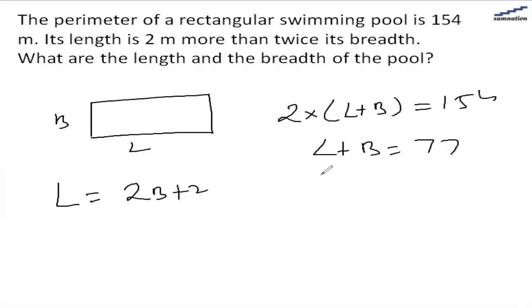So let's substitute length here. So we have 2b plus 2 plus b, that equals 77. And we have 3b plus 2 equals 77.